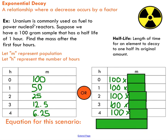So for example, uranium is commonly used as a fuel to power nuclear reactors. We've got this 100 gram sample. It's got a half-life of one hour. So after one hour, you're going to have half of your original sample. And our goal is to find the mass after the first four hours. This is a very similar example to the previous one, except this time we're working with exponential decay.